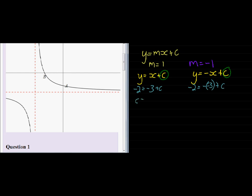So that we find here that c is either equal to 1 or c is going to equal negative 5. So we have two answers, y is equal to x plus 1 or y is equal to negative x minus 5.